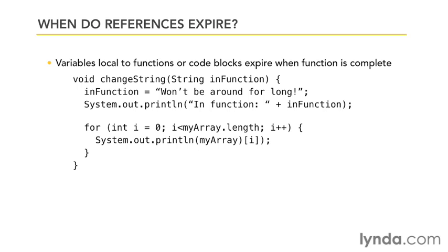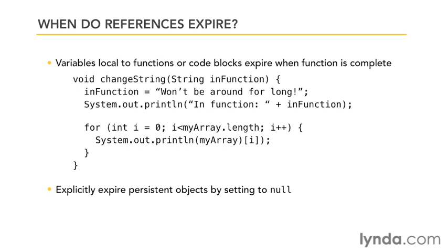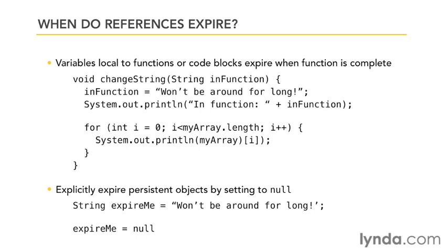For variables that are more persistent, such as fields within objects, you can explicitly expire them by setting their value to null. So for example, here's a string named 'expire me', and if I want to make it eligible for garbage collection,